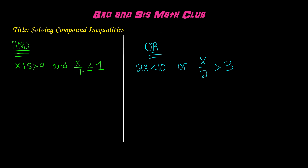Here we have x plus 8 is greater than or equal to 9, and x over 7 is less than or equal to 1. In order to find the solutions to these inequalities, we must use inverse operations.